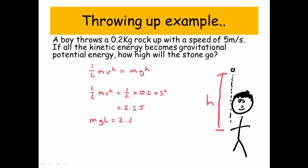So we can say that gravitational potential energy, MGH, is equal to 2.5. So let's put the numbers in our equation for gravitational potential energy. So 0.2 times by 10 times by H, which we don't know, is equal to 2.5. Rearrange to make H the subject of the formula. And we find that H is equal to 1.25 meters.